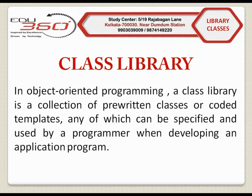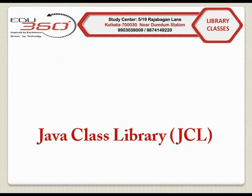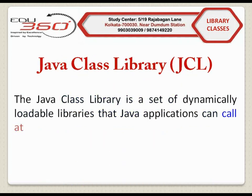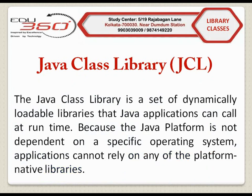The major component of JDK is the Java Class Library or JCL, which contains various packages. Each package of JCL is a collection of classes containing different built-in functions like print, println, nextInt, Math.pow, Math.sqrt, etc. The JCL is a set of dynamically loadable libraries that Java applications can call at runtime, because Java is platform-independent and cannot depend on any other operating system's libraries. All other programming languages also have their own libraries to run different functionalities.